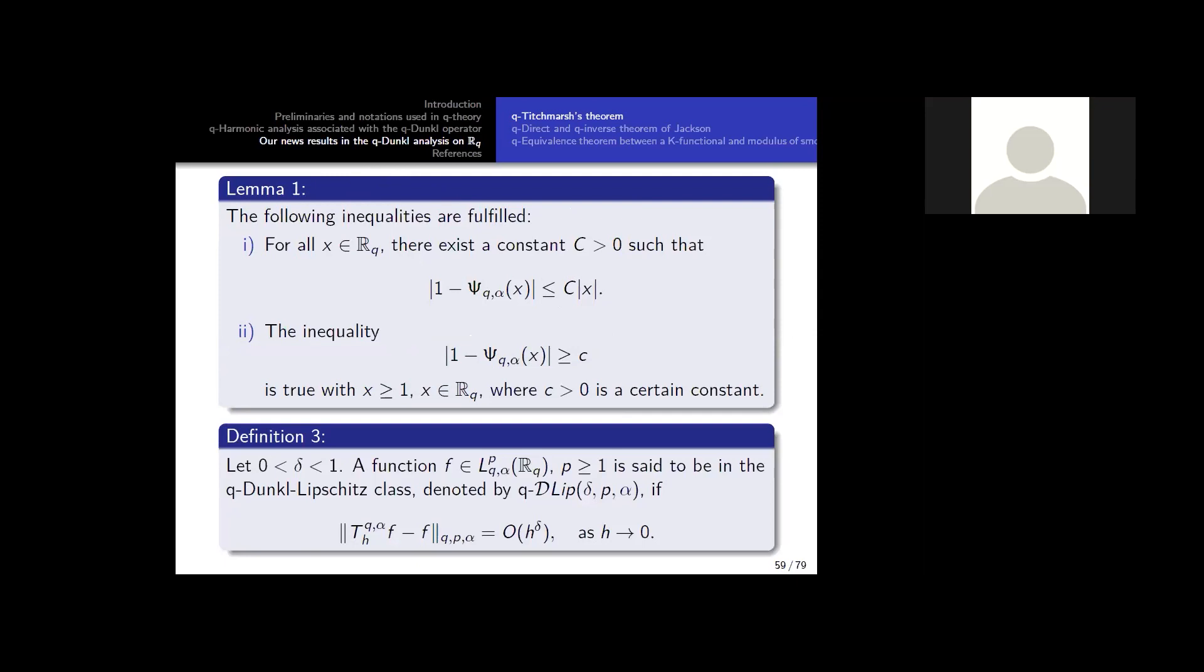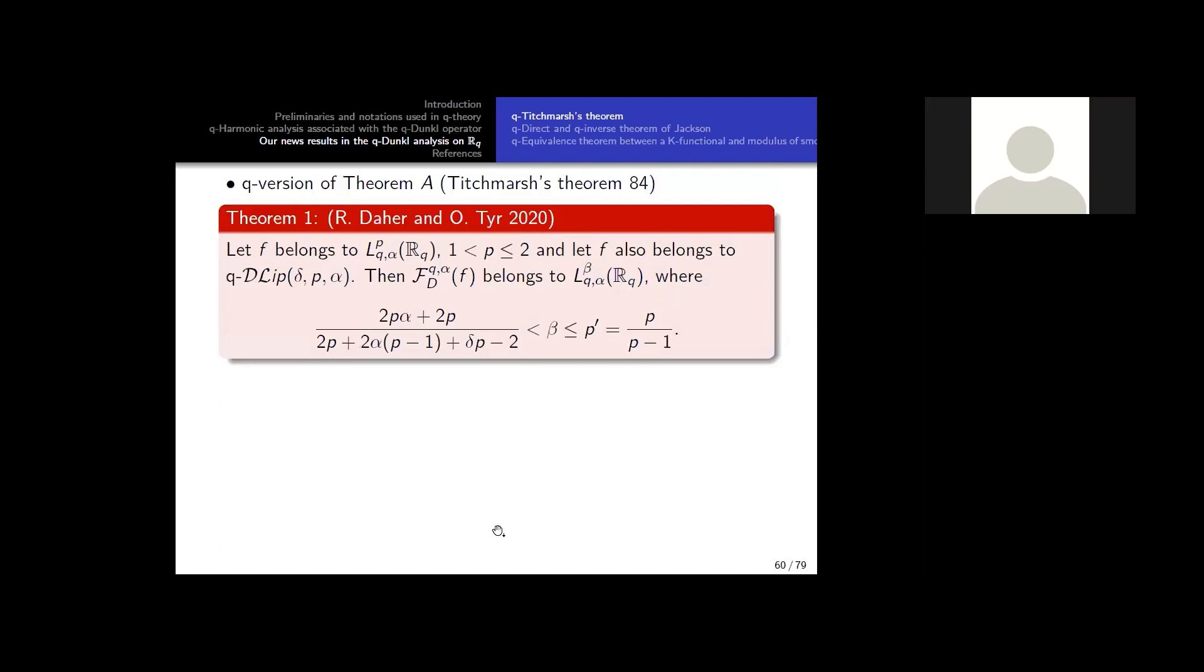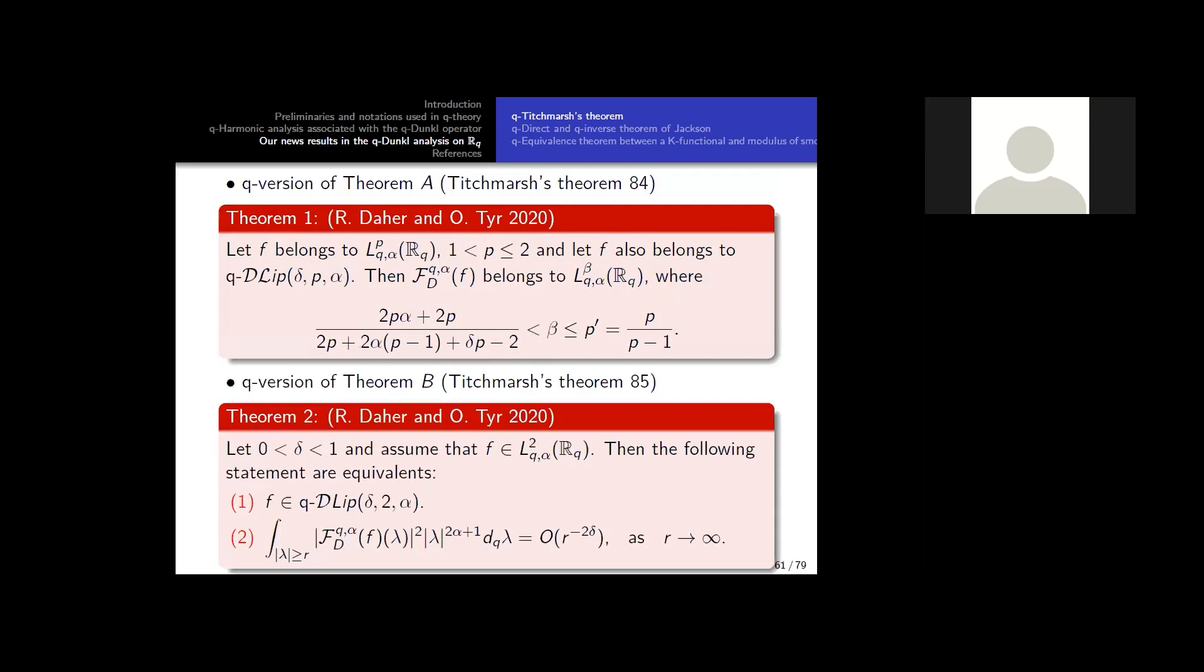We find also some analog of Lipschitz space. So we replace the usual translation by the Q-Dunkel translation. So we have Q-Dunkel Lipschitz spaces. And this is our first result, an analog of Titchmarsh's theorem. Look at this estimate - you have the same structure, it's similar to the classic one. And this is our first result.